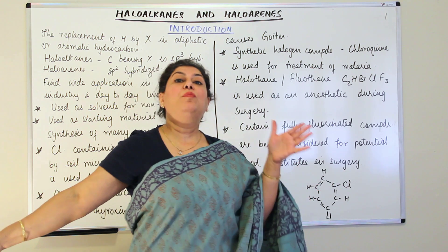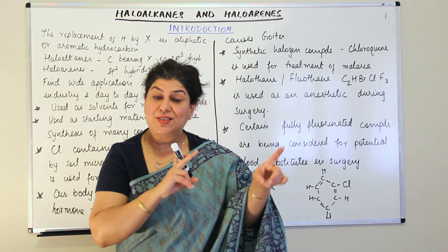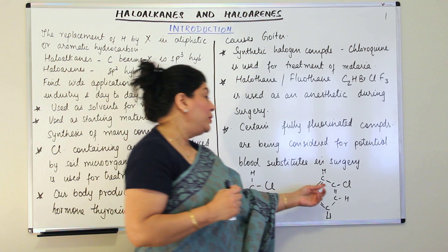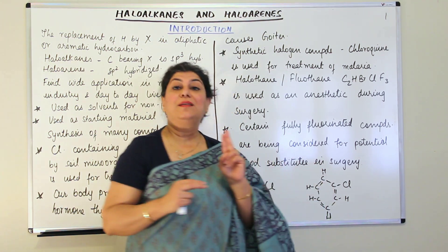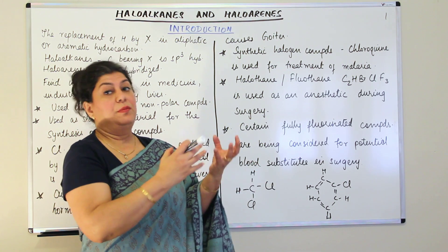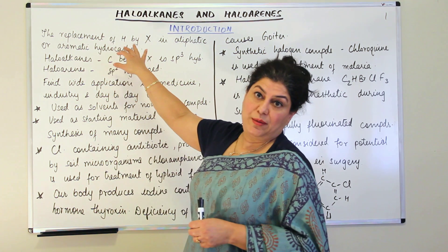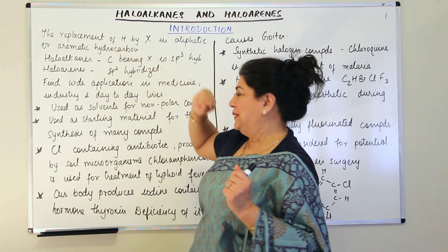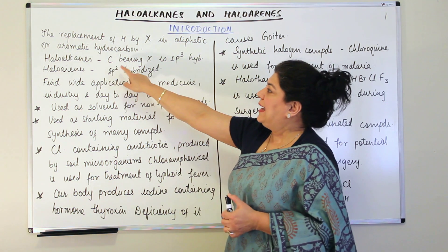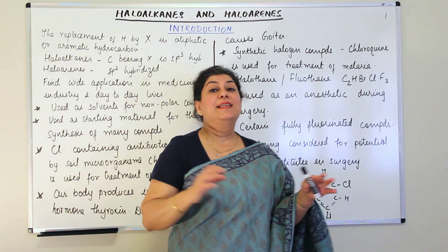What is the difference? In haloalkanes, the halogen atom substitutes a hydrogen attached to a carbon that is sp3 hybridized — whenever carbon forms four single bonds, it is sp3 hybridized. But if carbon forms even one double bond, it is sp2 hybridized. In haloarenes, the carbon to which the chlorine is attached is sp2 hybridized because those carbons are connected by a double bond.